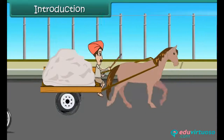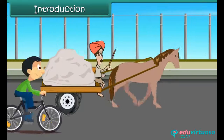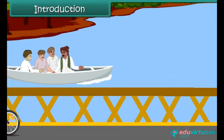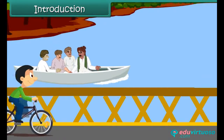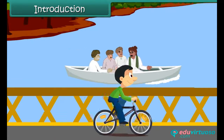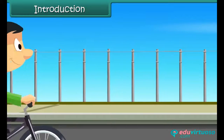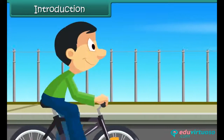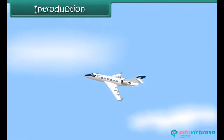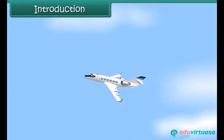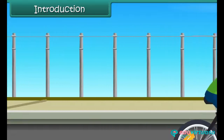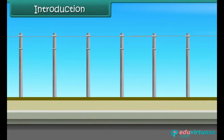He cycles past a bullock cart carrying sand. Soon he is cycling along the banks of the Yamuna river. He finds men crossing the river in boats. He hears a noise in the sky and looks up to find a jet fly past. In this lesson, you will learn about different modes and means of transport.